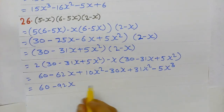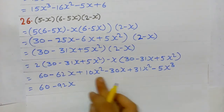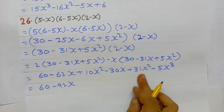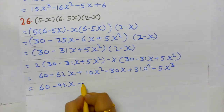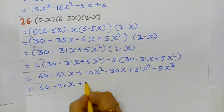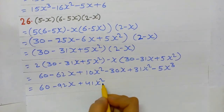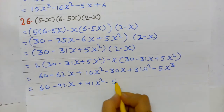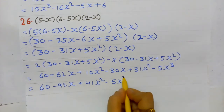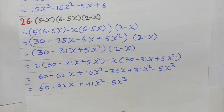Now adding like terms: constant = 60; -62x - 30x = -92x; 10x² + 31x² = 41x²; -5x³ as it is. So the answer is -5x³ + 41x² - 92x + 60.